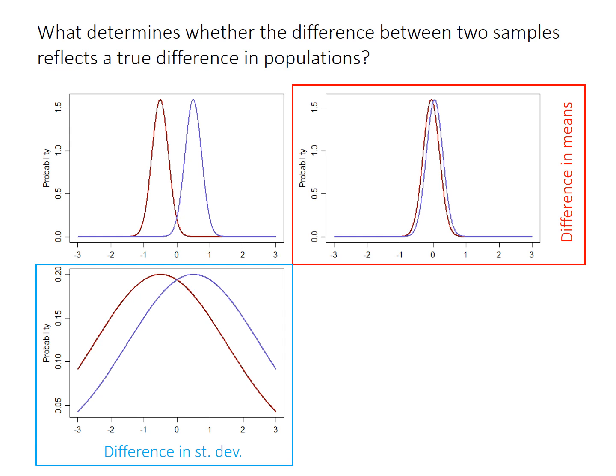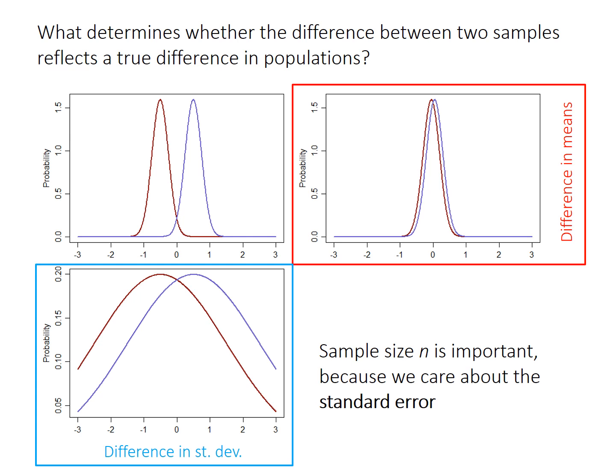Intuitively, you can see how the difference between sample means and the standard deviations of each sample are important for determining whether it's likely that the two samples came from the same population or not. In addition, sample sizes are also important because we actually care about the standard error, not the standard deviation. The standard error is a measure of the accuracy of the sample mean — how accurately it represents the population mean.